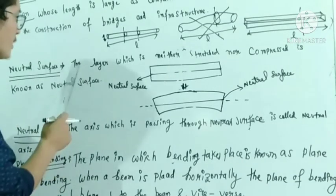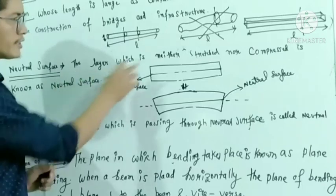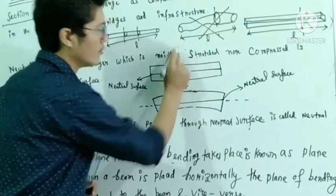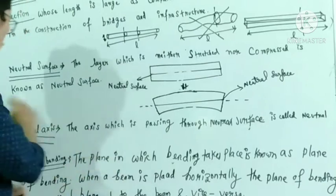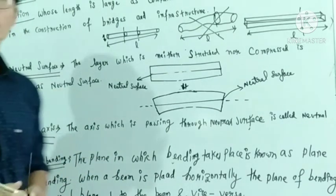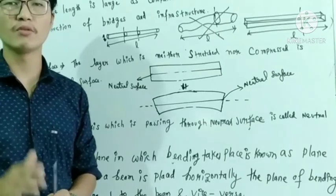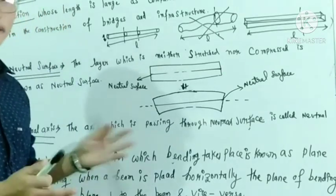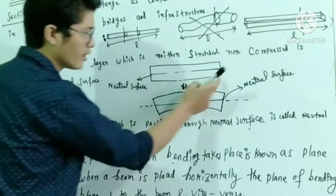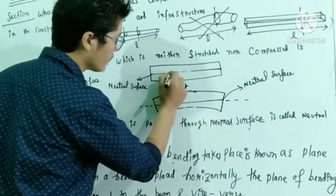The layer which is neither stretched nor compressed is known as the neutral surface. The layer which is neither stretch nor compress is known as neutral surface. This is a rectangular beam and this is the neutral surface shown in the diagram.